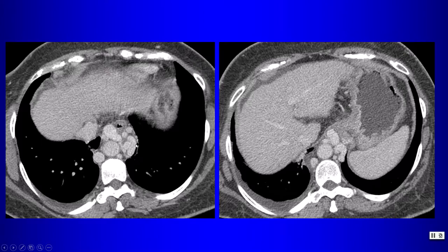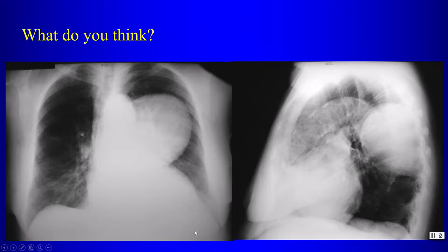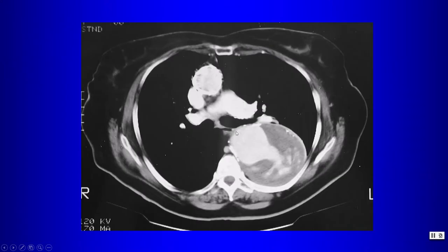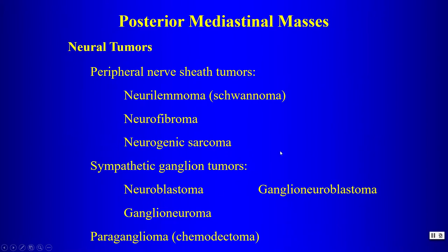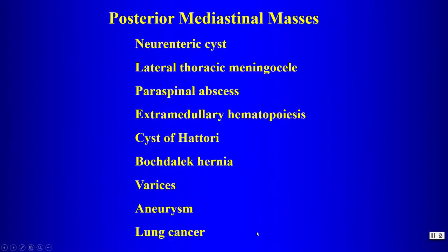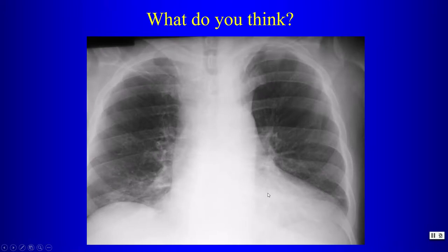A large posterior mediastinal mass inseparable from the aorta reminds us always to consider aneurysm in the differential for any mediastinal mass — especially before recommending biopsy. That concludes our discussion of posterior mediastinal masses; remember aneurysm and lung cancer for all mediastinal compartments.